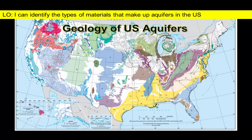This colorful map shows the most significant aquifer systems in the US. The type of aquifer present under different locations is largely a consequence of the local geology. Let's take a look at some of the most common types of US aquifers.